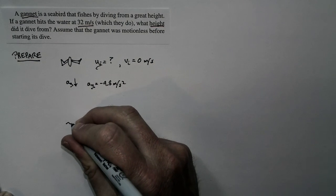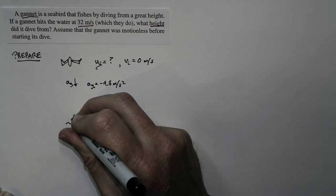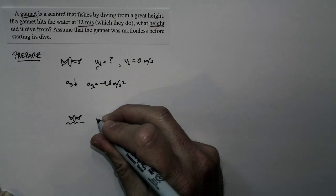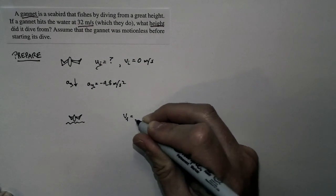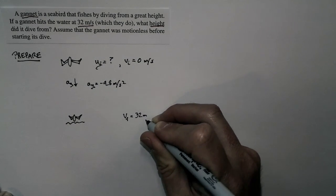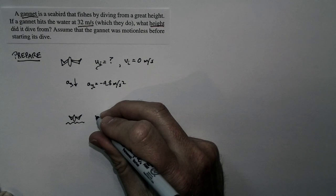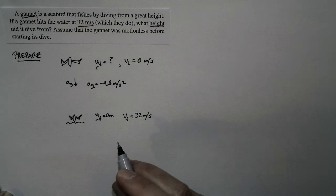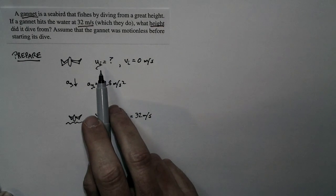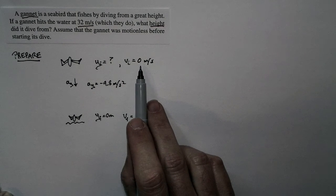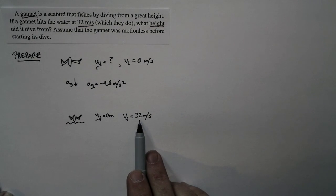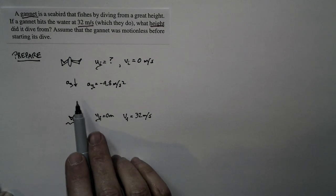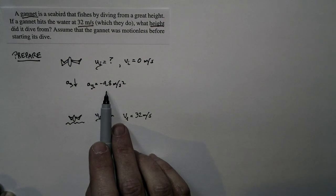And then at some time later, the gannet makes it to the surface of the ocean. We're told that the speed that it hits at is 32 meters per second. The final position is zero meters, right at the surface of the water. So it drops from a height that we don't know to zero meters, speeds up from zero meters per second to 32 meters per second.